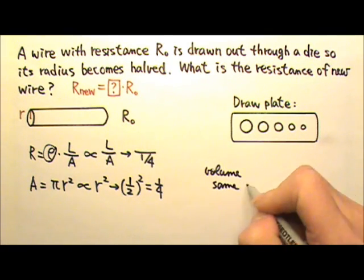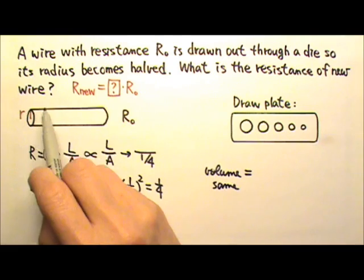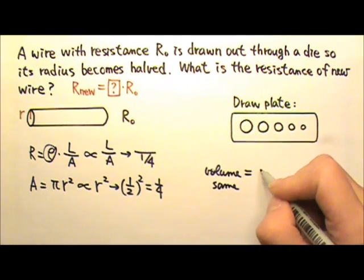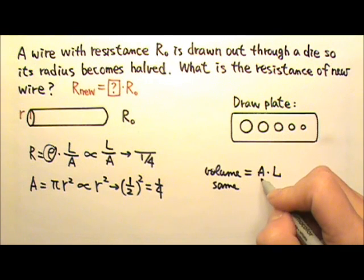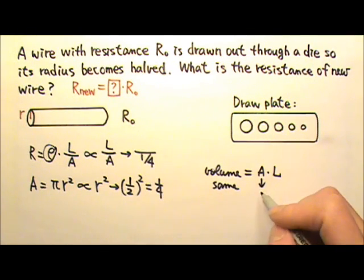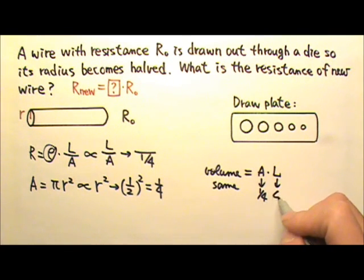The volume stays constant, and what is the volume of a wire with cross-sectional area A and length L? It is the cross-sectional area times the length. Since the cross-sectional area changes by a factor of one-fourth, that means the length must quadruple in order to keep the volume the same.